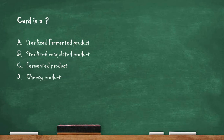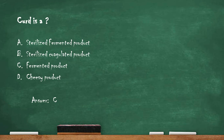Next question: curds is — option A: a sterilized fermented product. Option B: a sterilized coagulated product. Option C: a fermented product. Option D: a cheesy product. The right answer is option C — curds is a fermented product.